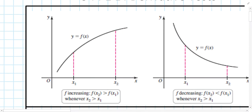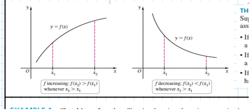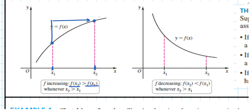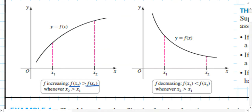Before we get there, let's remind ourselves of what it means to be an increasing function, or a function that is increasing on a particular domain. An increasing function means the function result at x2 is greater than the function result at x1, as long as x2 is greater than x1. Since we have an understanding of derivatives, any position along this curve has a positive first derivative, as indicated by the slope of the tangent line at each of those points.